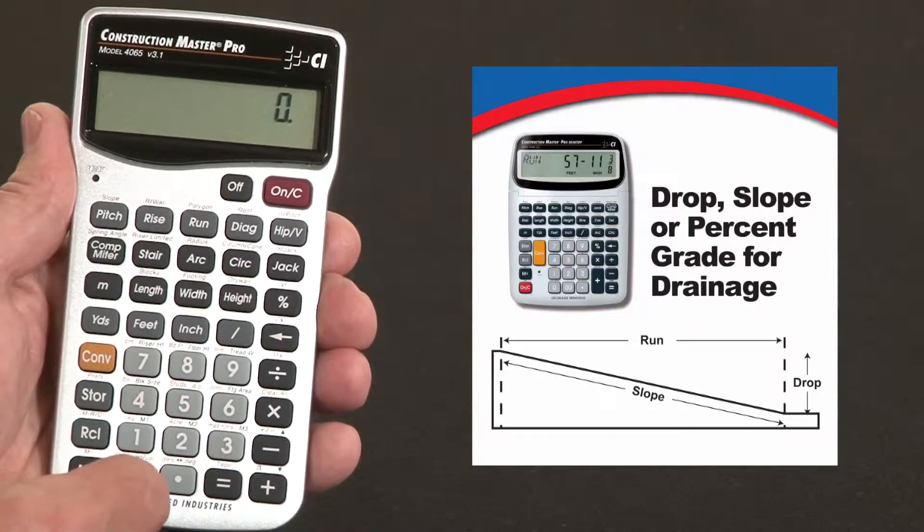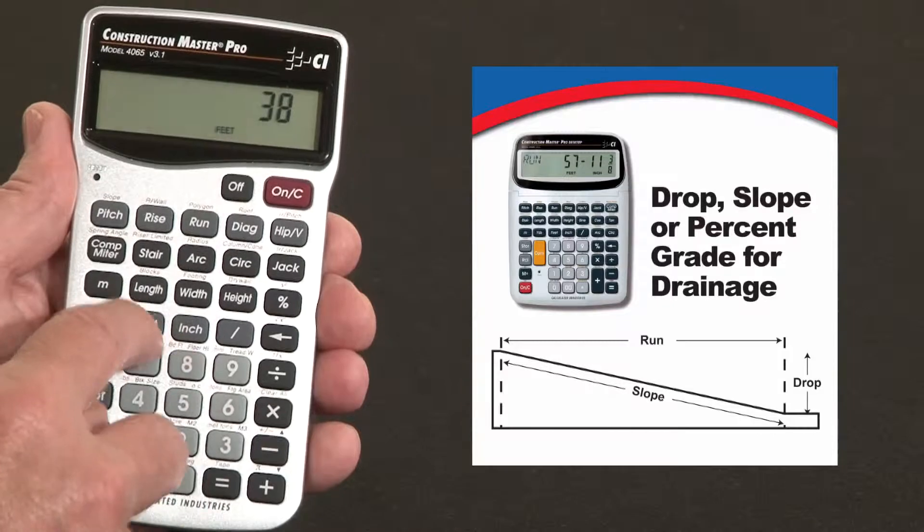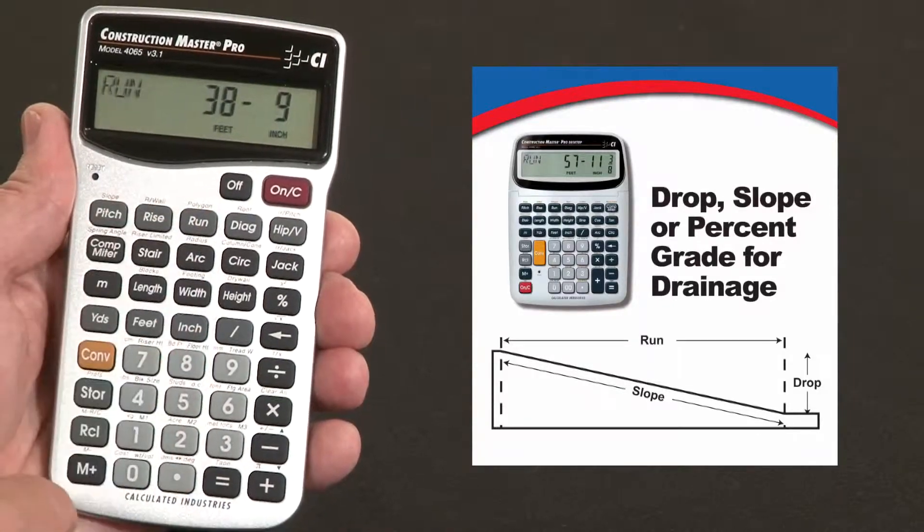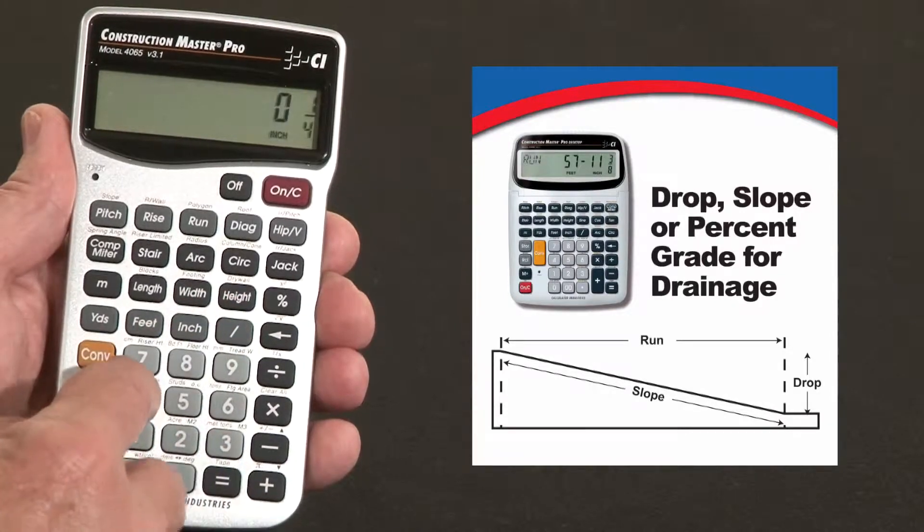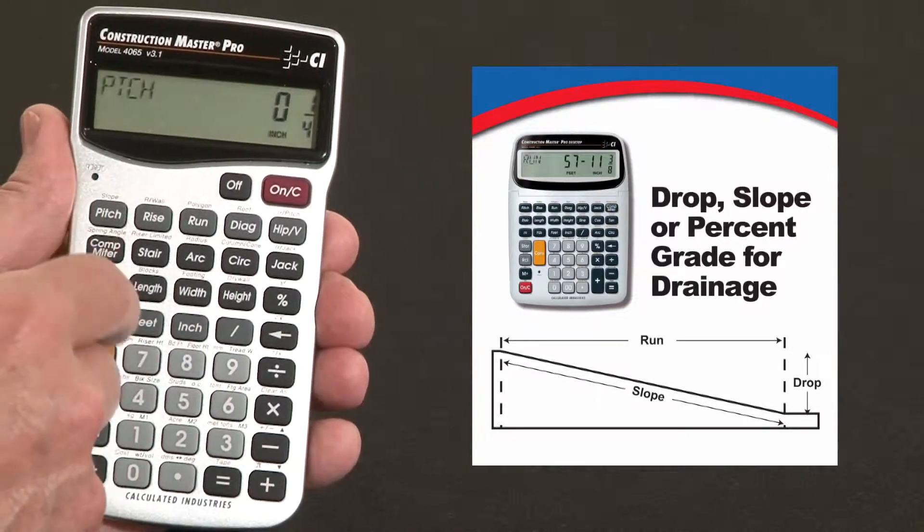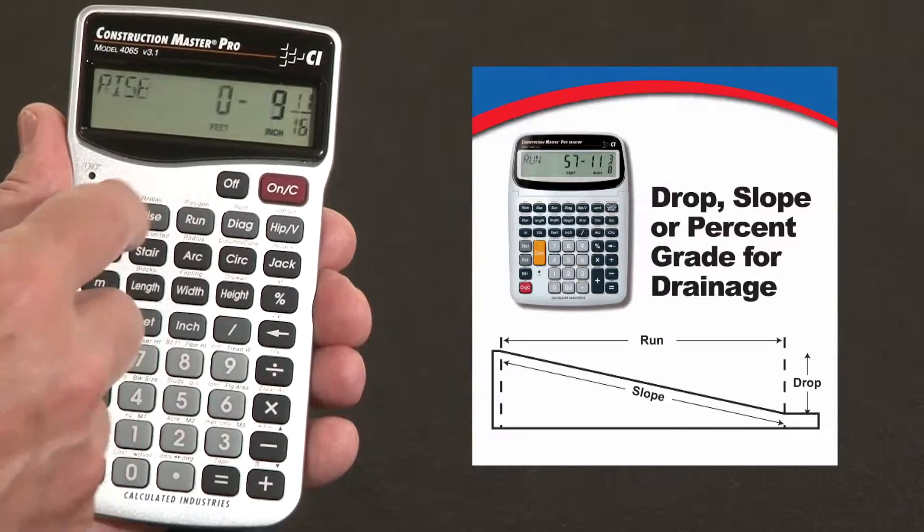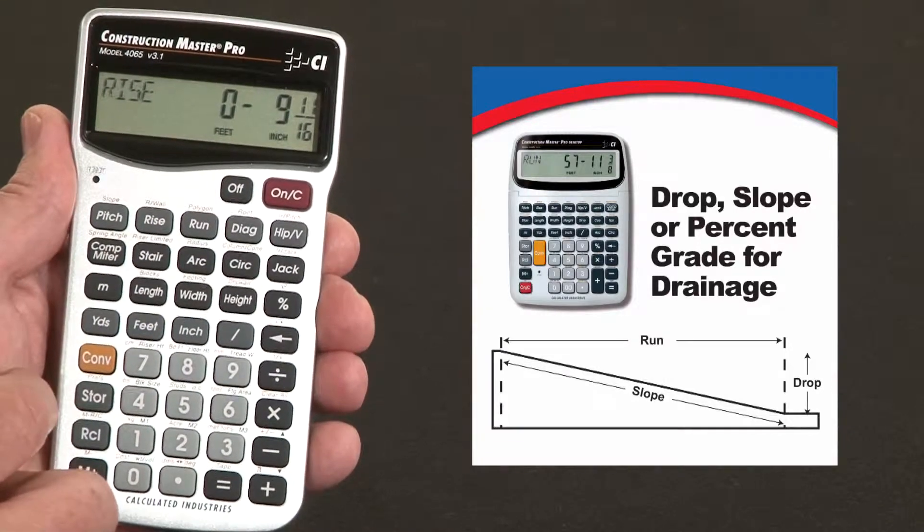Say we've got a total run of a driveway of 38 feet 9 inches. We're just going to call that our run. And we want it to fall or drop at a quarter inch per foot, one quarter inch. Call that our pitch. What will be the vertical change at the far end? It'll be 9 and 11 sixteenths inches lower.